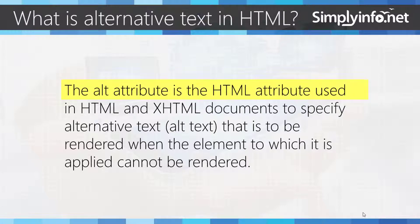The alt attribute is the HTML attribute used in HTML and XHTML documents to specify alternative text that is to be rendered when the element to which it is applied cannot be rendered.